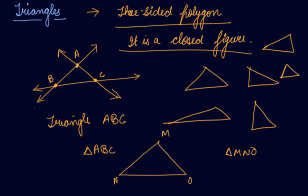I am taking points P, R, N, L. Can you name a point in the interior of the triangle? It is P. Name a point at the exterior of the triangle? R. And name the point on the triangle? It is L.